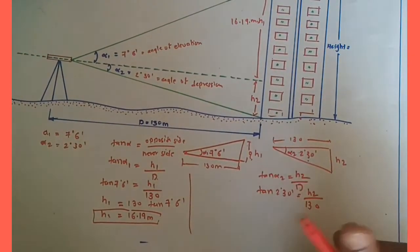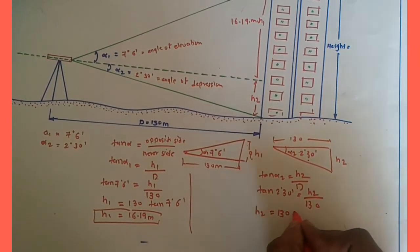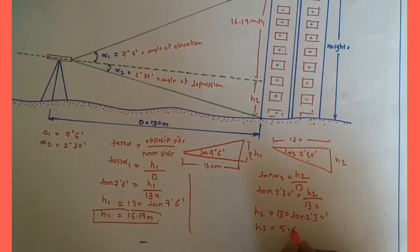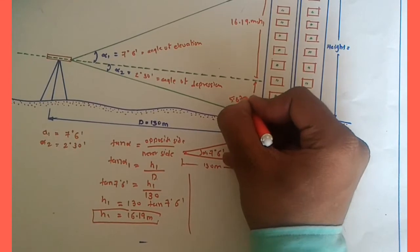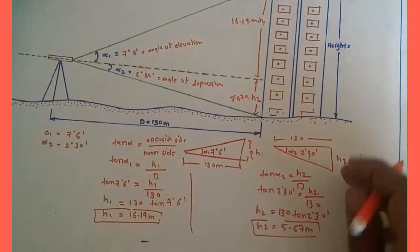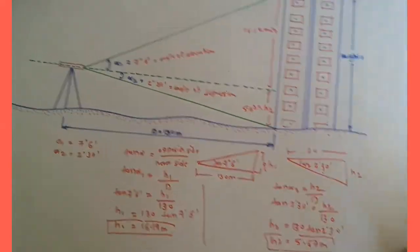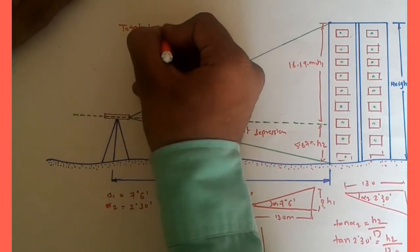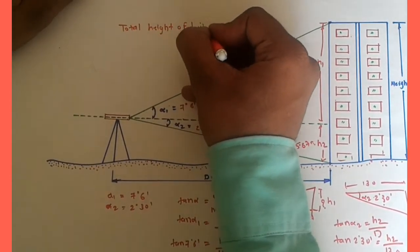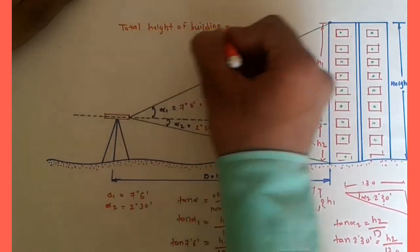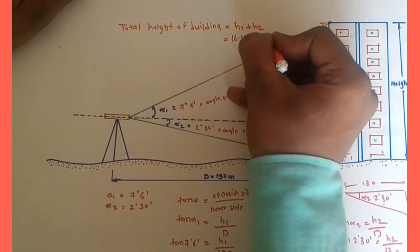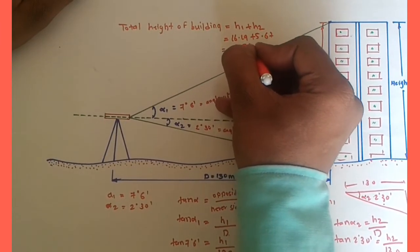So h2 equals 130 times tan of two degrees 30 minutes. Calculating this, h2 will be 5.67 meters. We now have h1 and h2, and to get the total height of the building we sum them: total height equals h1 plus h2, which is 16.19 plus 5.67.